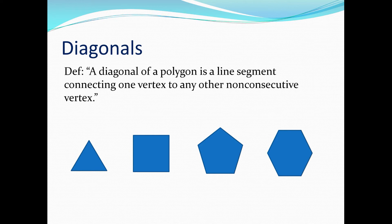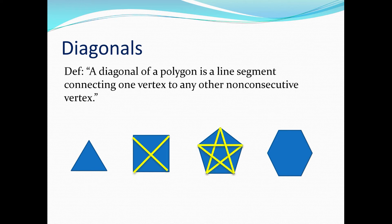If we look at the square, it turns out we can draw two diagonals, connecting non-consecutive vertices. For a pentagon, there are five diagonals we can draw inside the polygon. And for a hexagon, there are nine diagonals.